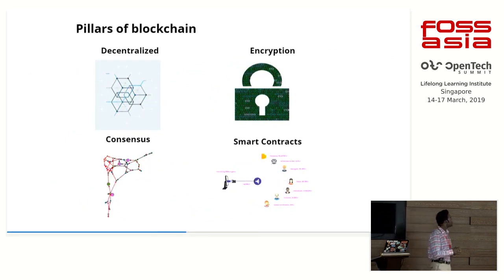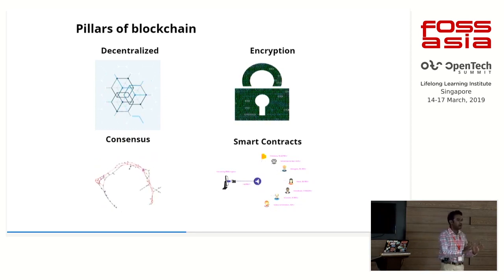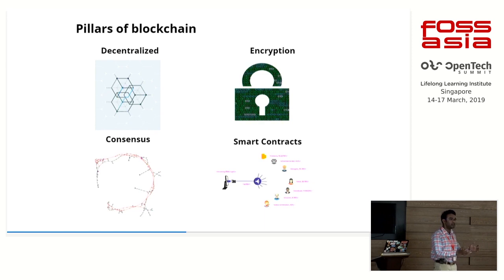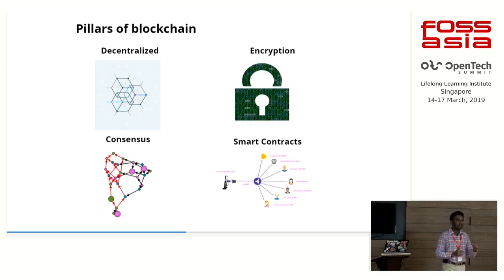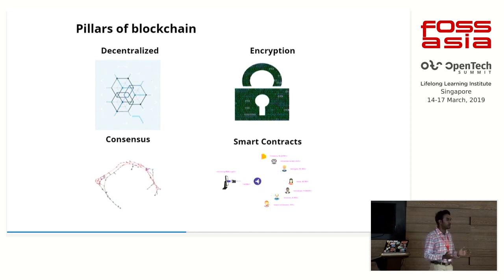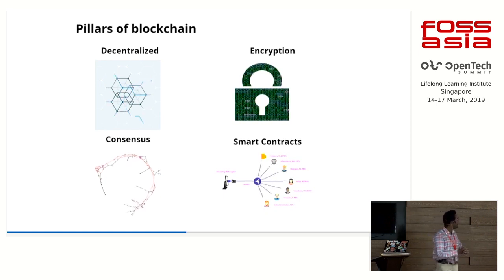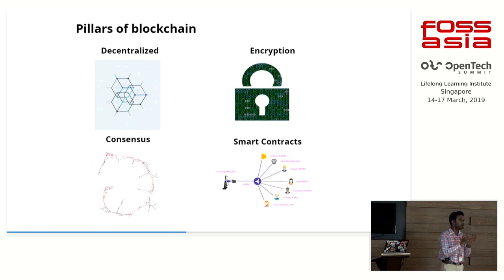Coming to the pillars of blockchain. First is decentralization — there is no single trusted party taking care of all trust or security; each block is responsible for its own security and the trust it builds with others. Second is encryption: we have two major layers — hashing and an asymmetric key algorithm — due to which it becomes practically impossible to trace the exact content of shared data. Third is consensus: if I want to add my transaction to the block, I should get consensus from each and every block in the chain.